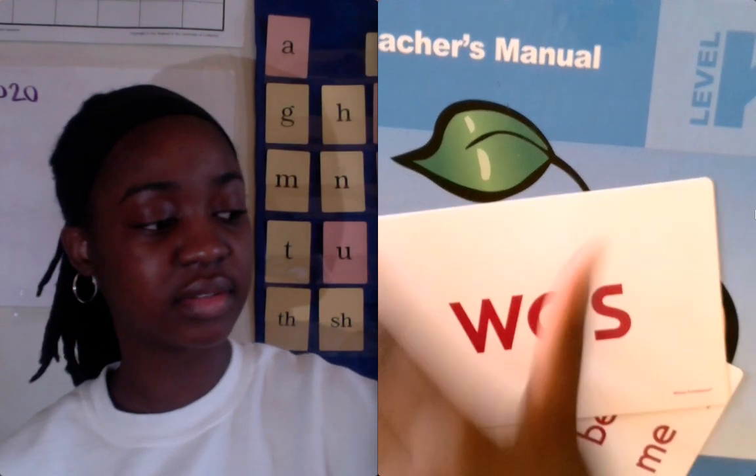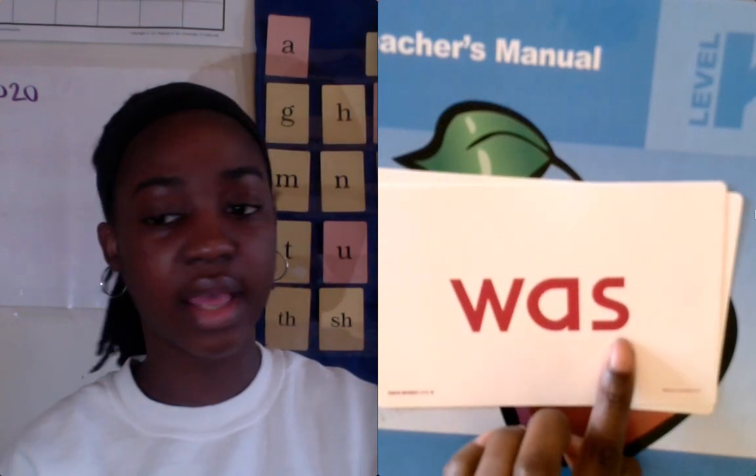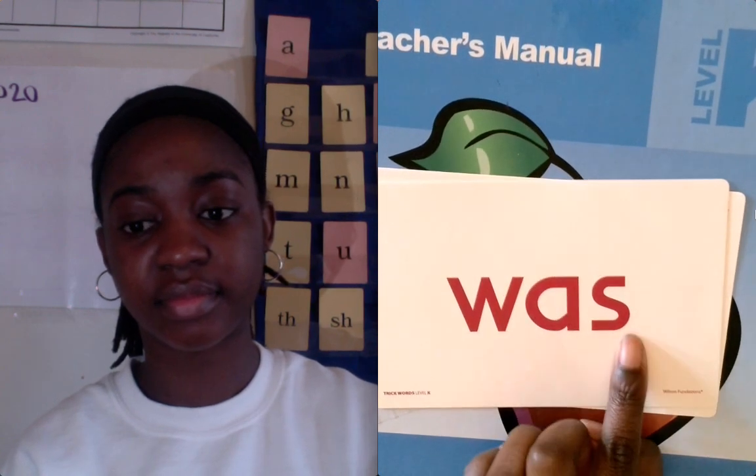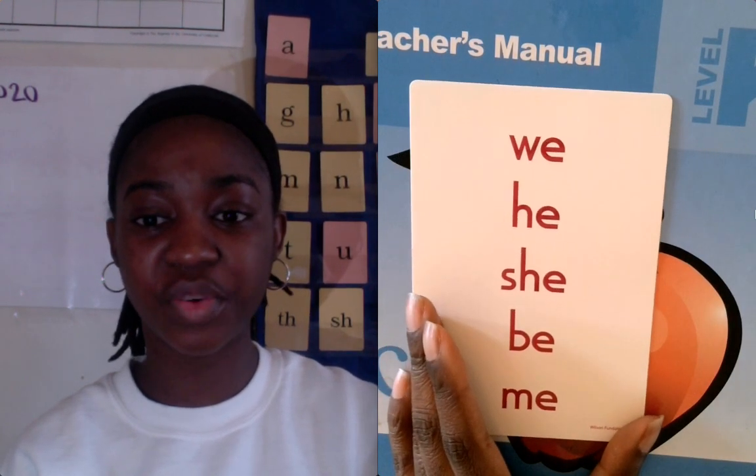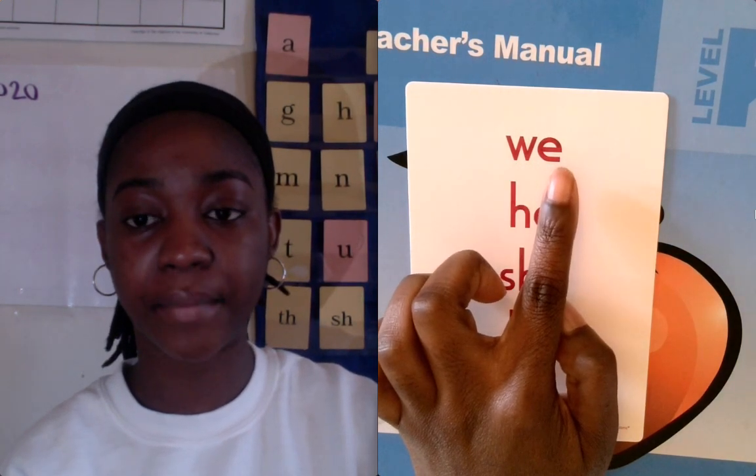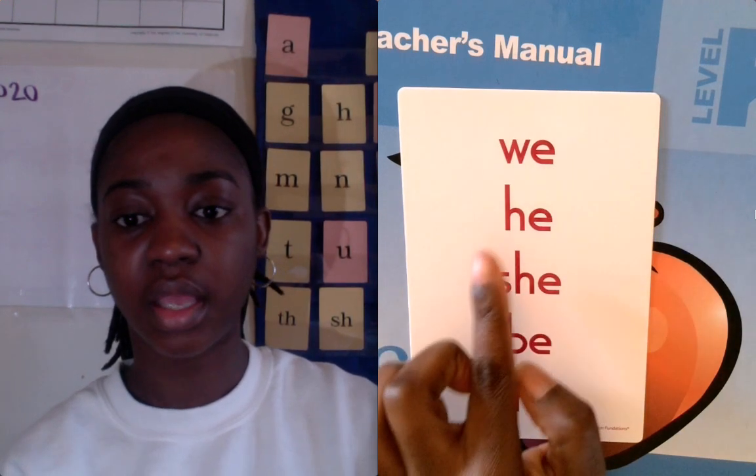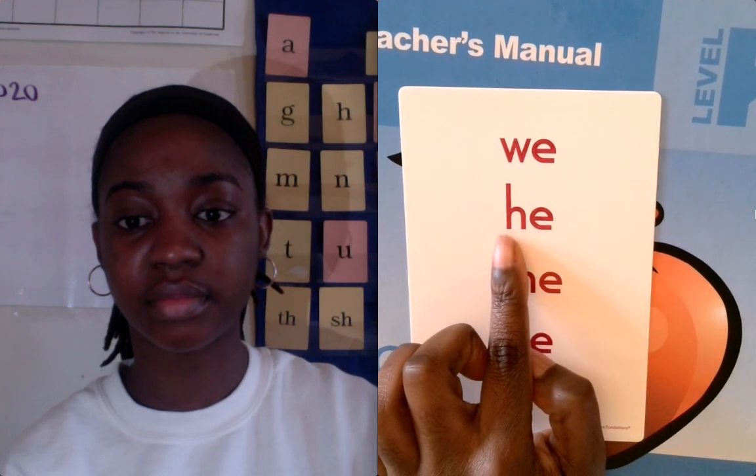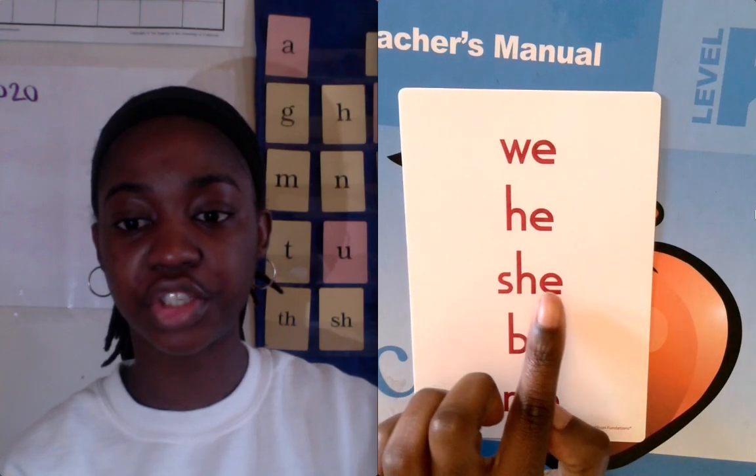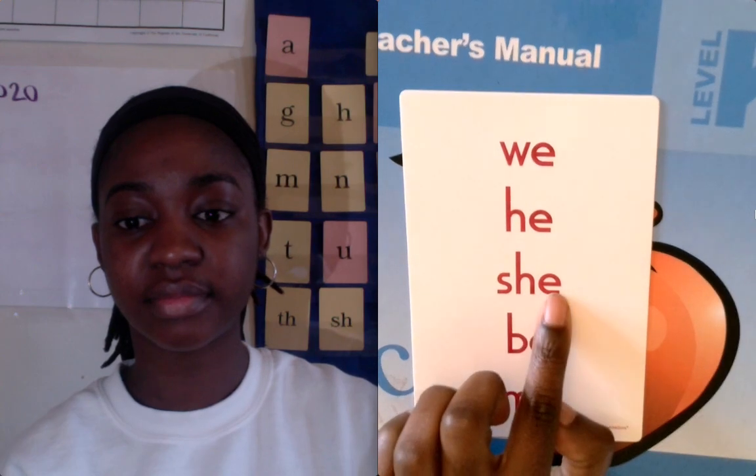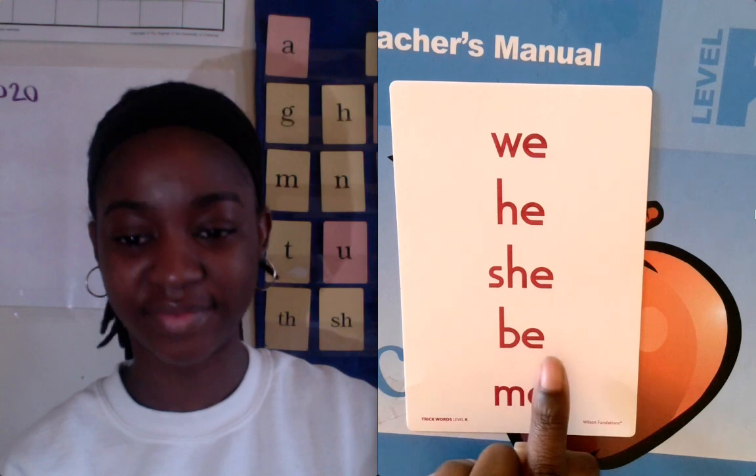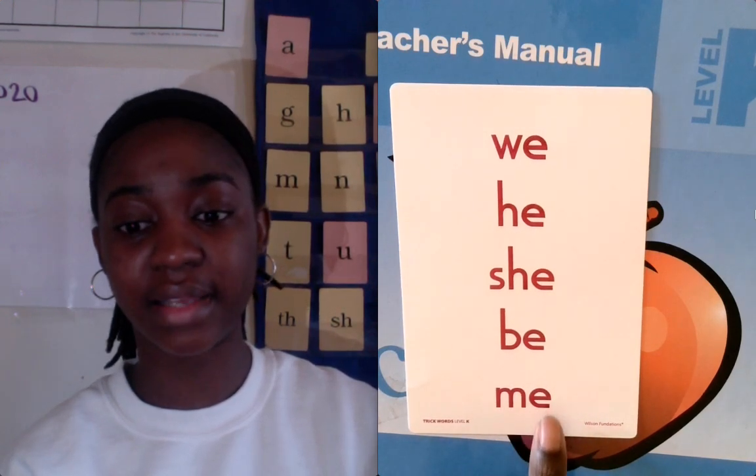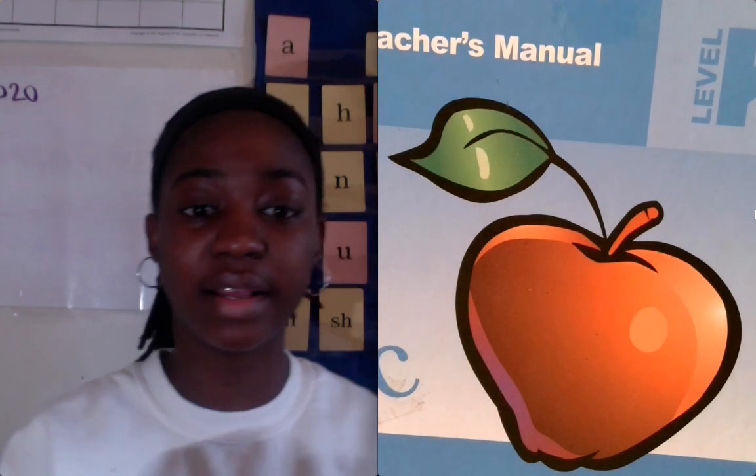Next, we have W-A-S, was. And these are our last few words that we've learned. So we have W-E, we. H-E, he. S-H-E, she. B-E, be. That's right. M-E, me. Very good.